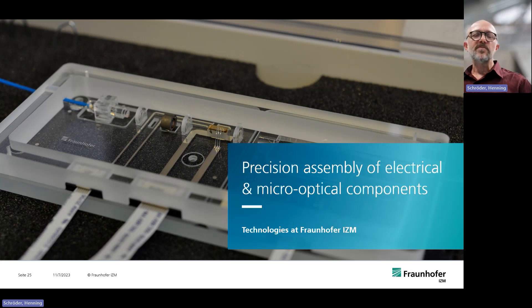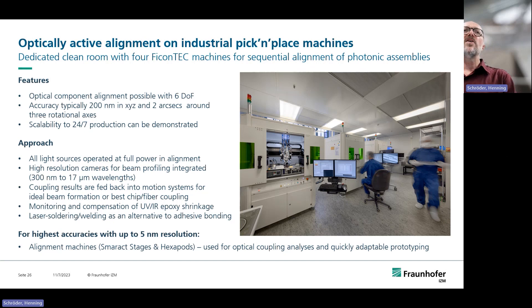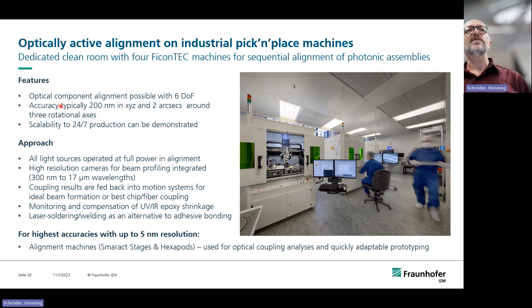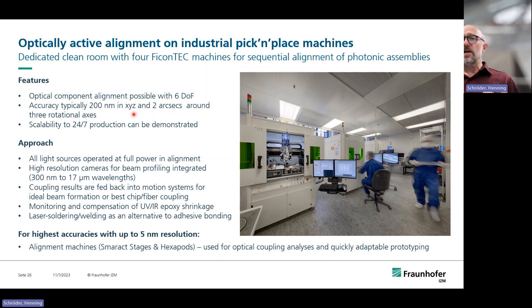The last part is precision assembly of electrical and micro-optical components. Because we have many photonic assembly demands, we use special bonding equipment — FICON-TECH stages, several of which we have for optical active alignment. These are industrial pick-and-place machines with very high accuracy: below 200 nm in XYZ and two arcseconds around three rotational axes. We use them for assembly of optoelectronic, electronic, and micro-optic components, including fiber assembly.